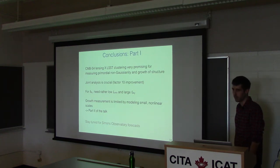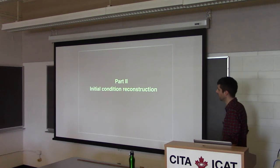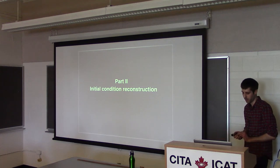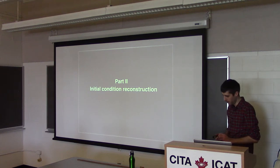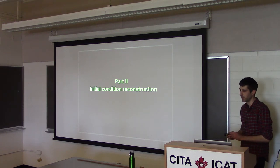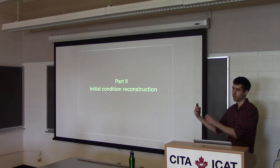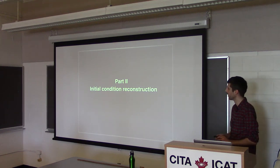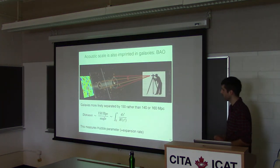In the second part of the talk, I'll discuss how we can try to reconstruct linear initial conditions from observed non-linear galaxy clustering. One motivation is that on small scales there's non-linear structure formation, so we cannot easily relate a cosmological model to non-linear observations. By reconstructing initial conditions, we can try to get around that problem. A simpler motivation relates to the CMB lensing story — in the CMB we have acoustic peaks with one-degree separation, and in galaxies we also have a preferred separation of around 150 megaparsecs: baryonic acoustic oscillations.